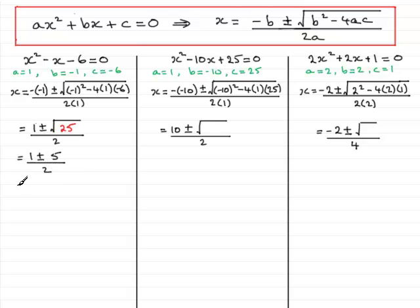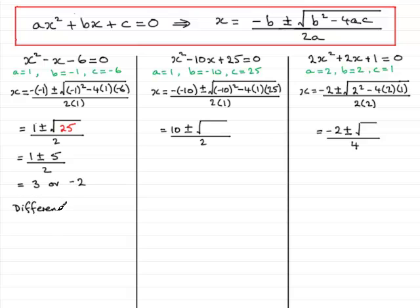This is going to lead to two solutions. 1 plus 5, which is 6, divided by 2 gives 3. And the other solution is going to be 1 minus 5, which is minus 4, divided by 2 is minus 2. So what we've got here are two different solutions — we call those solutions roots. So we've got different roots.